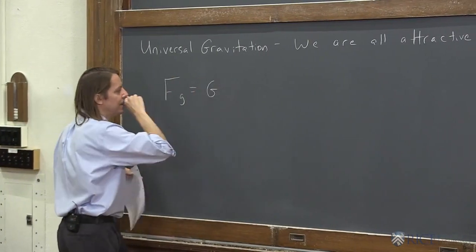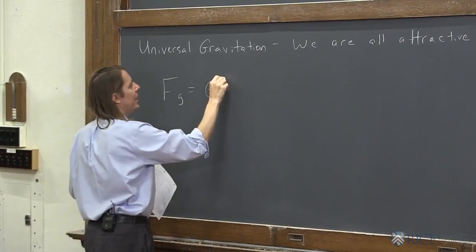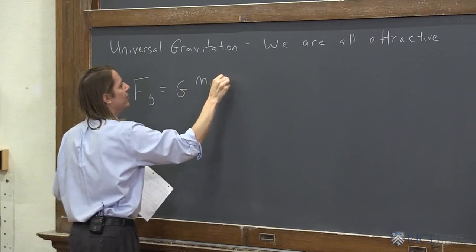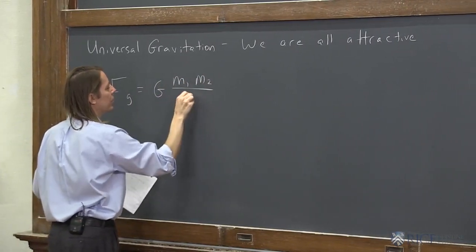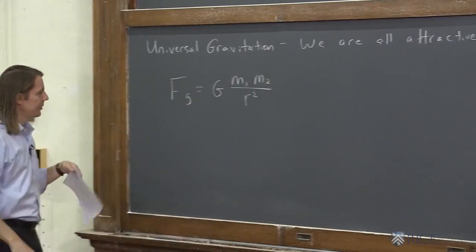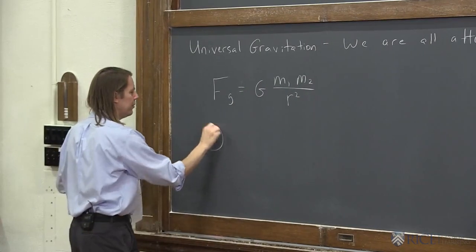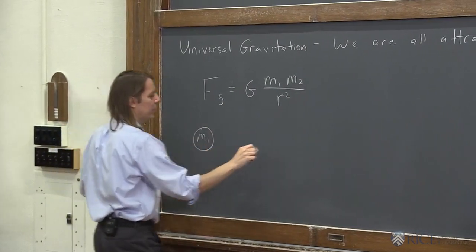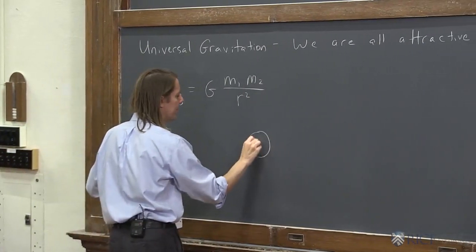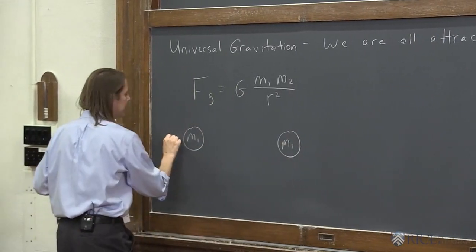F_g equals G, a new constant, times the mass of one times the mass of the other over their separation squared. So if we want to think about it, the graph, here's mass one, here's mass two.